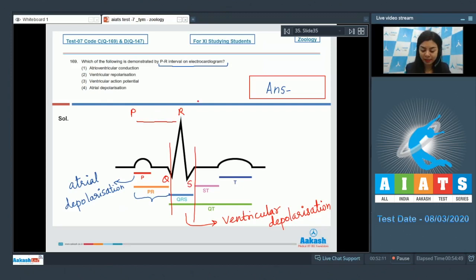This PR interval is the time that represents atrioventricular conduction. The correct answer would be option number 1, atrioventricular conduction.